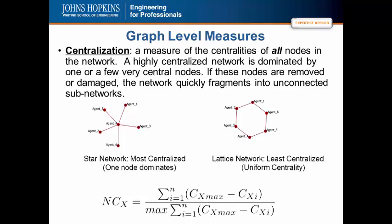In this example, the two networks you see below: the star network is the most centralized network. This network structure, where one node is connected to everybody else and everybody else is only connected to that central node, is the most centralized network. In this case, Agent 4 dominates the network by all centrality measures. A lattice network is the least centralized — this is where every node has the exact same centrality value by all centrality measures. That occurs in a lattice where the degree of every node is 2.